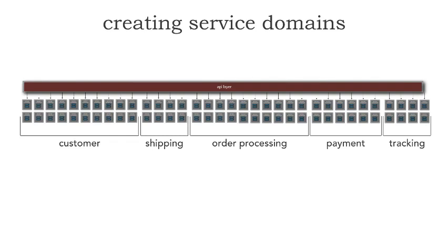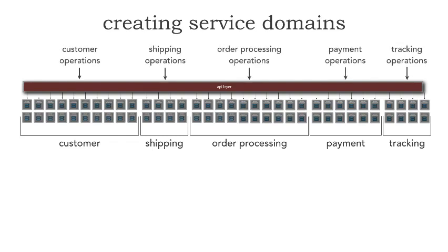As we start to grow our microservices ecosystem, we start to form these domains. We still have a problem, though, because we have a single API layer. I have seen in the field where as we start to grow the number of services, we start to dynamically grow our single API layer as well. This could be either a gateway or just a simple API proxy, such as Nginx or IIS or even a Squid or HA proxy. So the API layer holds all of those RESTful endpoints — customer, shipping, order processing, payment, and tracking operations all going into the same API layer, even though we have kind of logically partitioned these.